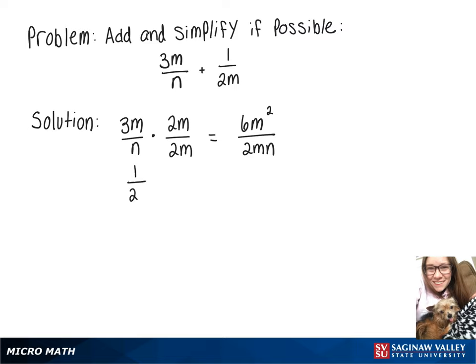And now we're going to take our 1 over 2m and multiply that by n over n. Because on top that gives us n and on the bottom we get 2mn.